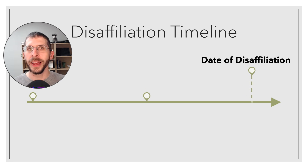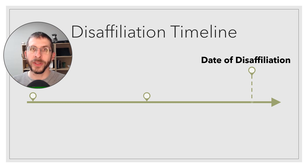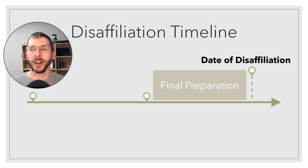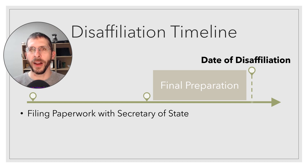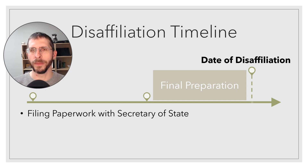Between when the annual conference approves your disaffiliation agreement and the actual disaffiliation date, there's still more work to do — this is our final preparation time. You need to file the Secretary of State paperwork: the articles of incorporation first, and then the articles of dissolution, which should include the trustees' resolution. Check whether you can post-date the filing or pick an end date; if so, you can file right away, otherwise you may want to wait.